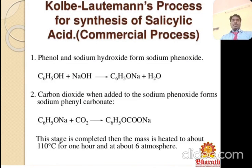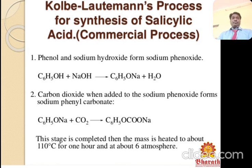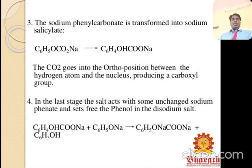Kolbe-Schmitt process — synthesis of salicylic acid: phenol reacts with sodium hydroxide to give sodium phenoxide. Carbon dioxide added to sodium phenoxide forms sodium phenyl carbonate. The mass is then heated to about 110°C for one hour at about six atmospheres. The sodium phenyl carbonate rearranges into sodium salicylate; carbon dioxide goes into the ortho position between the hydrogen atom and the nucleus to produce a carboxyl group.